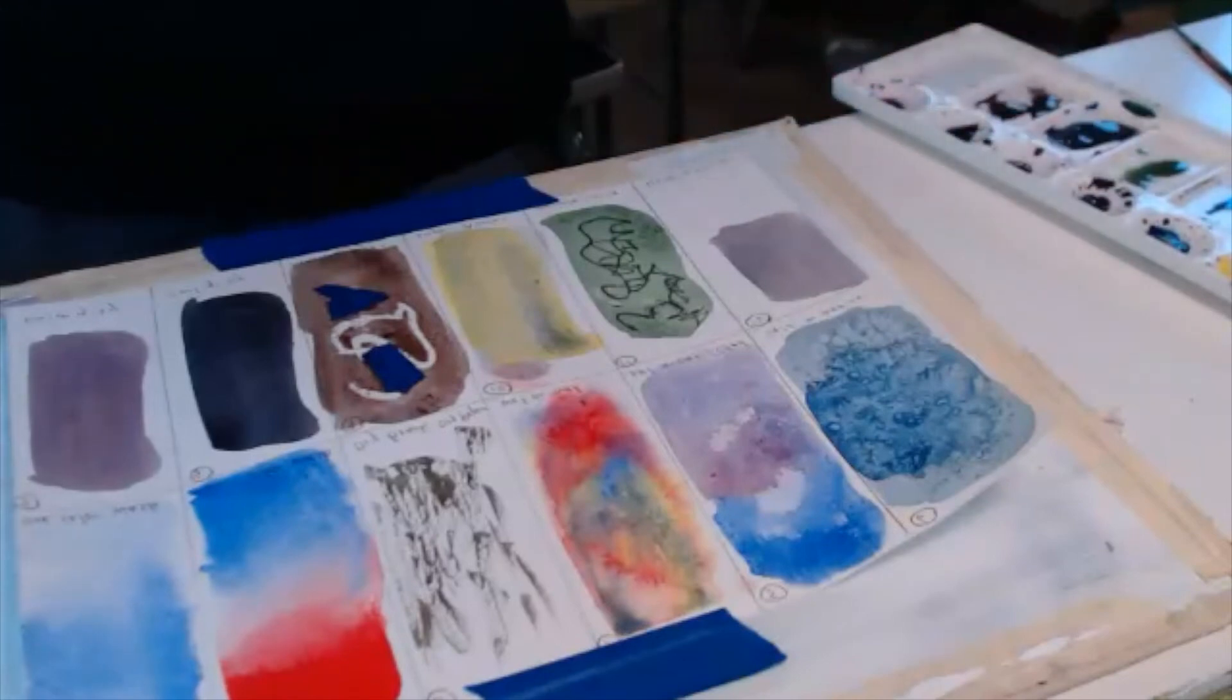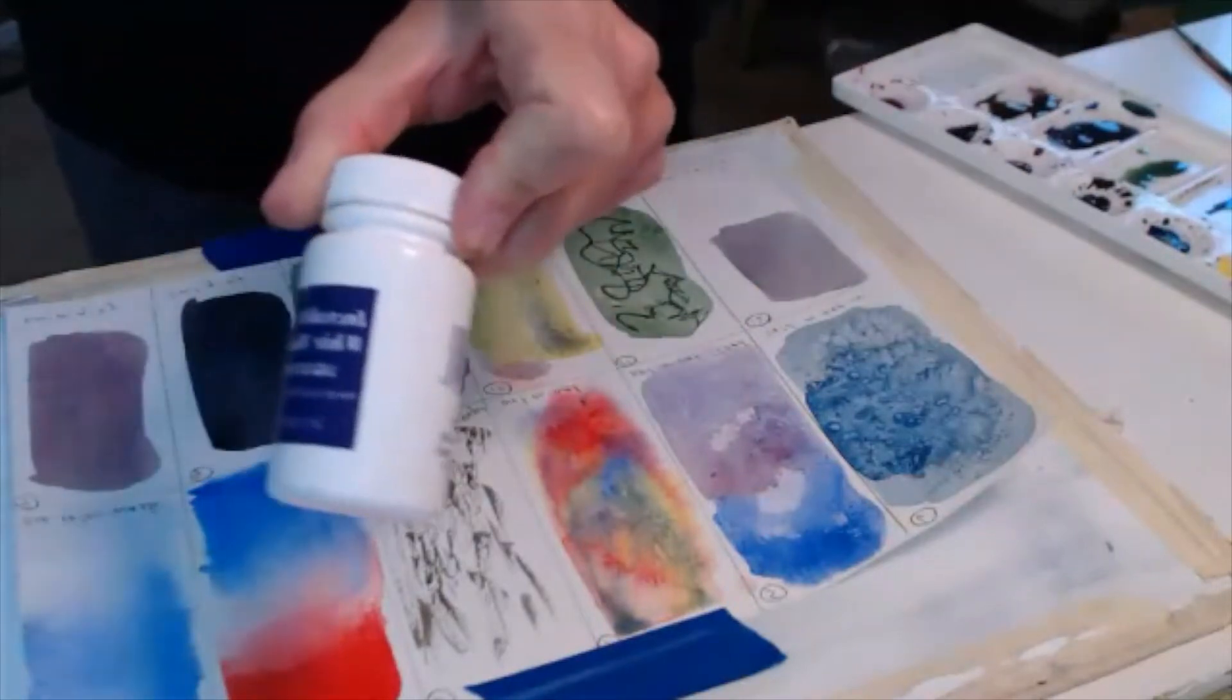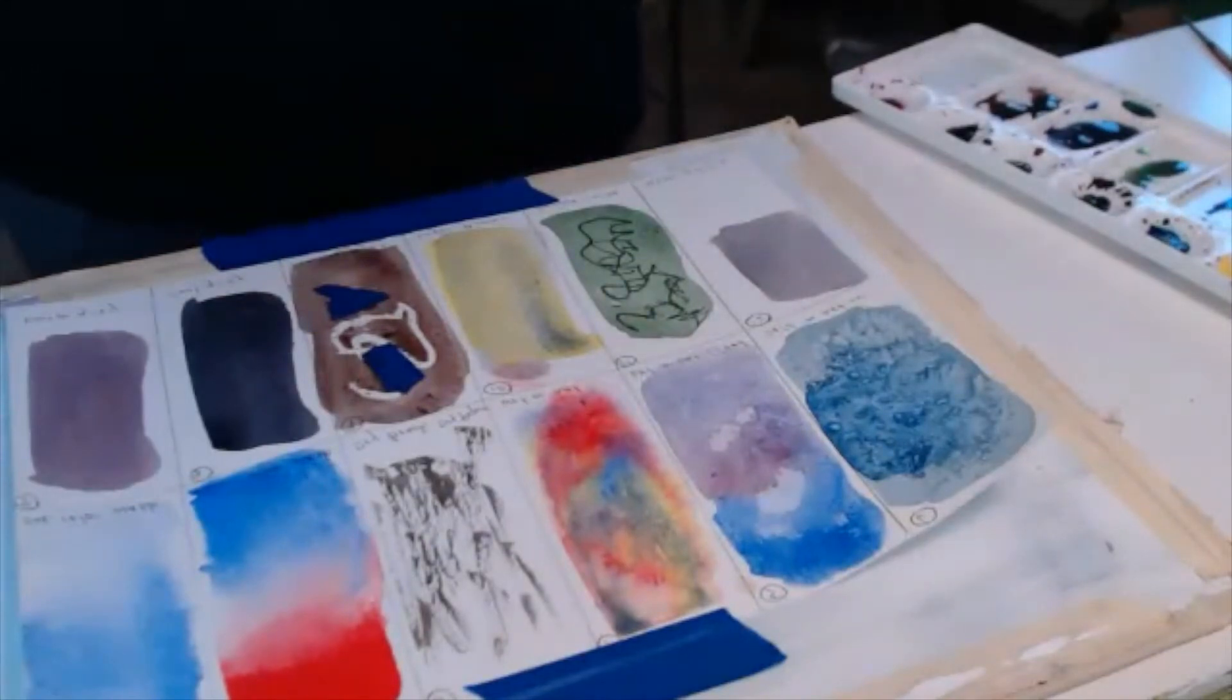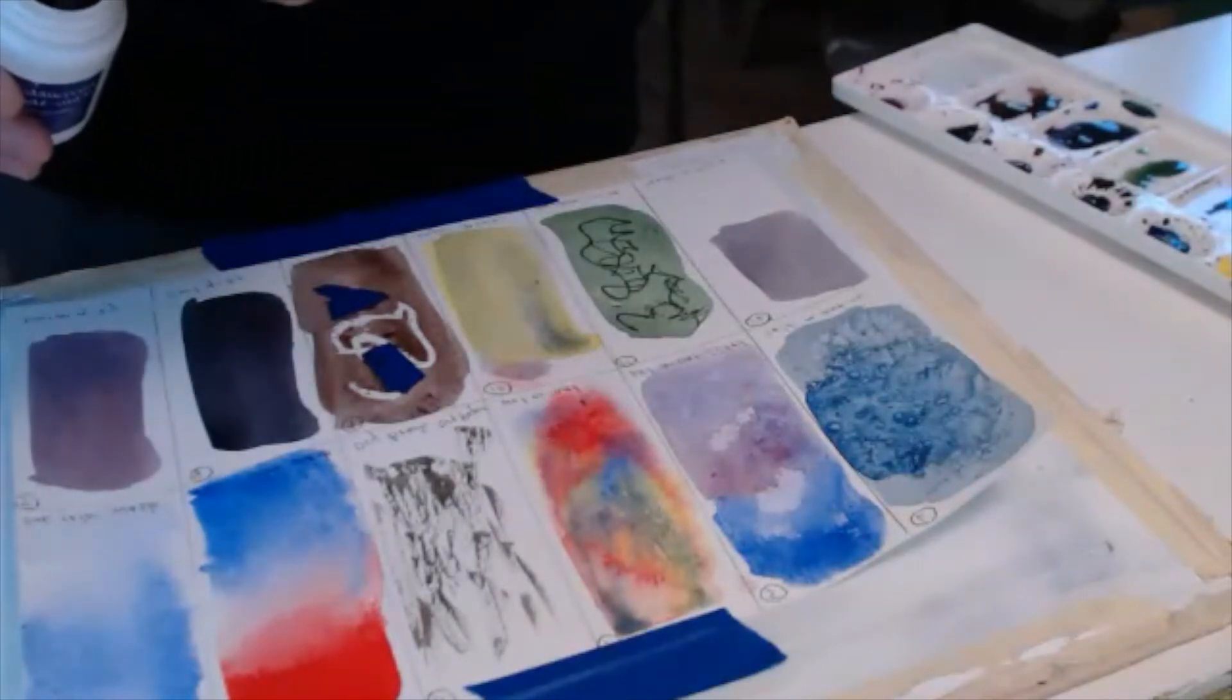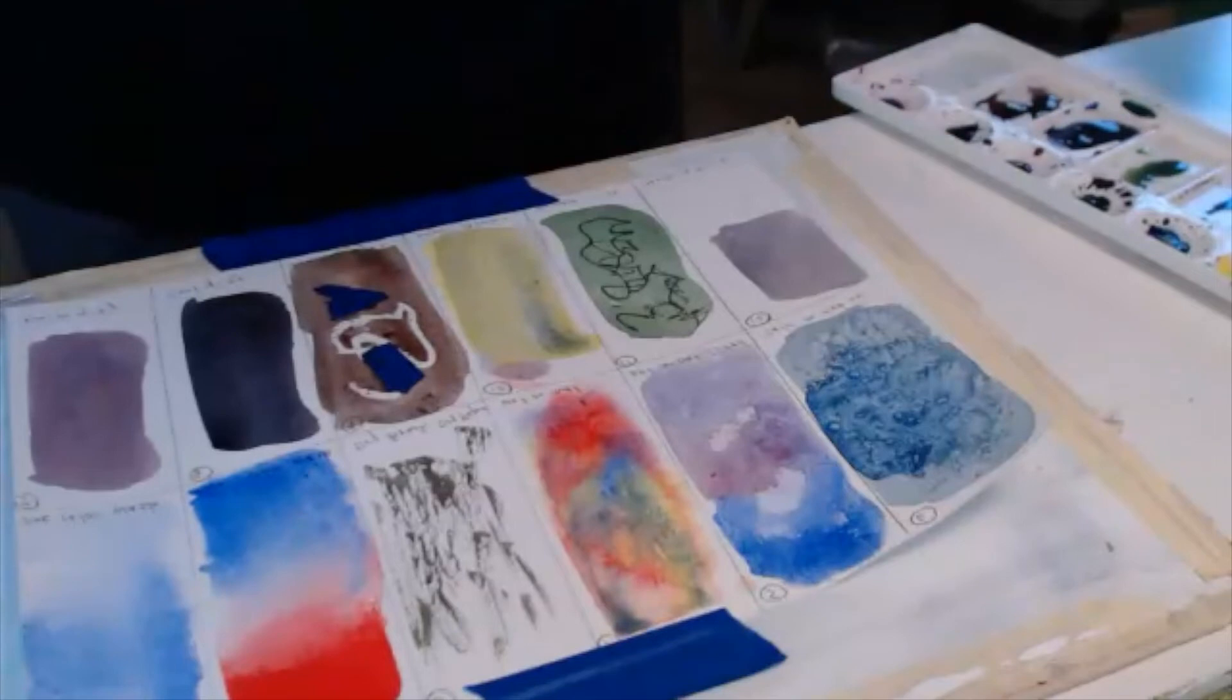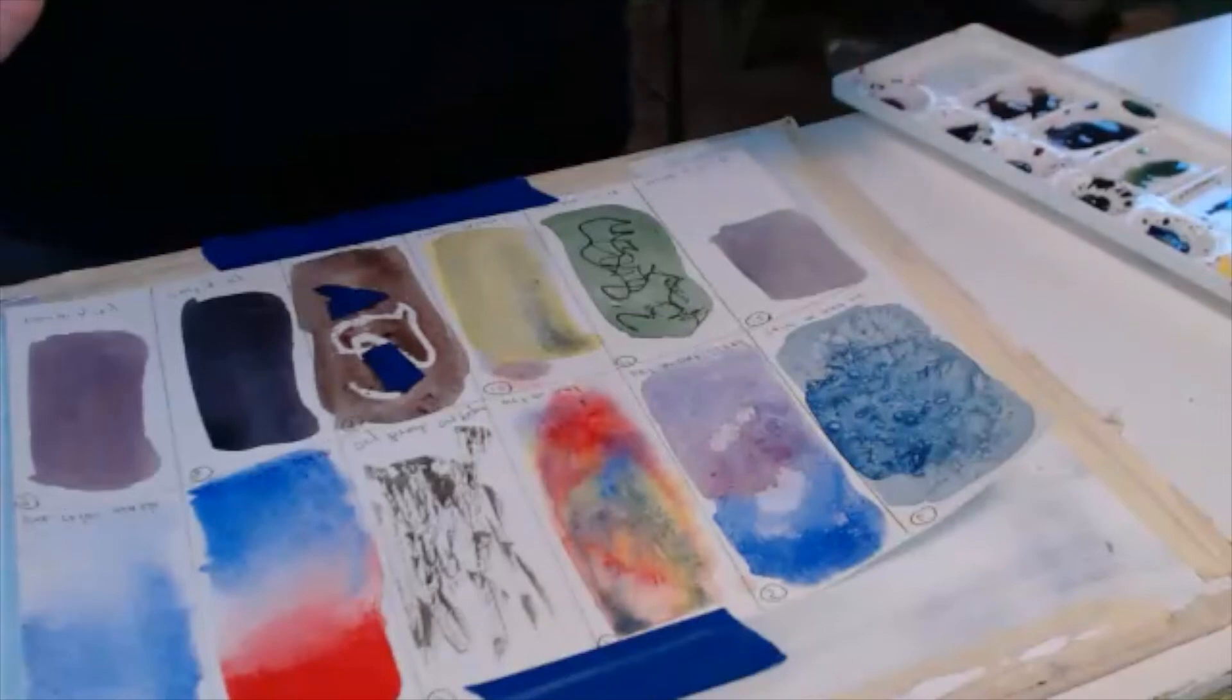The next one is masking fluid. This is called frisket or masking fluid and it's a liquid material. What you do is you paint it on the area you want to save white. One of the ways to do this is to take a paintbrush that you don't care about anymore, dip it in and in a place where you want to stay a hundred percent white in a very particular area, you paint that on. It's sort of like rubber cement. It dries and then you can paint over that. At the end of your painting or when you're ready, you rub it off with your hand and peel it off, and the white is underneath.